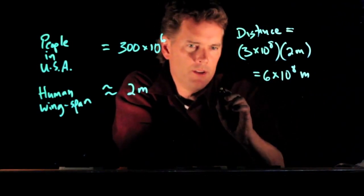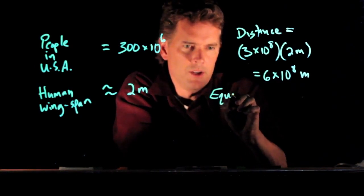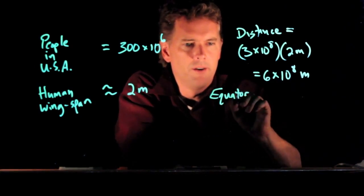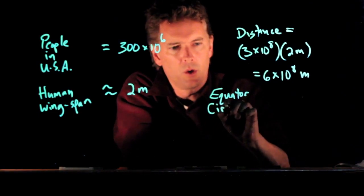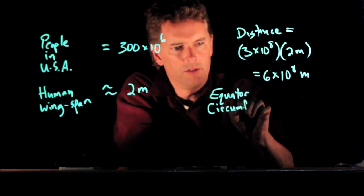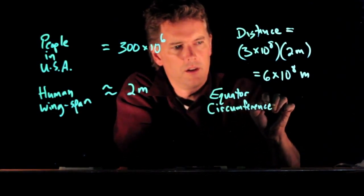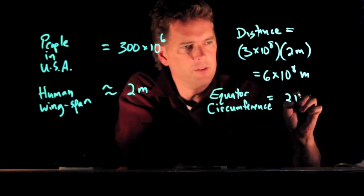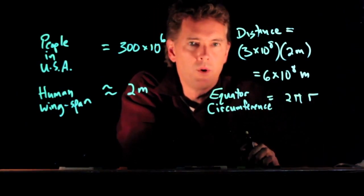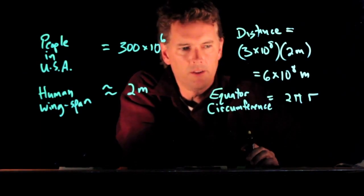Now, how far around do you go if you're on the equator? We want the equator circumference, and the equator circumference is equal to two pi r, where r is, of course, the radius of the earth.